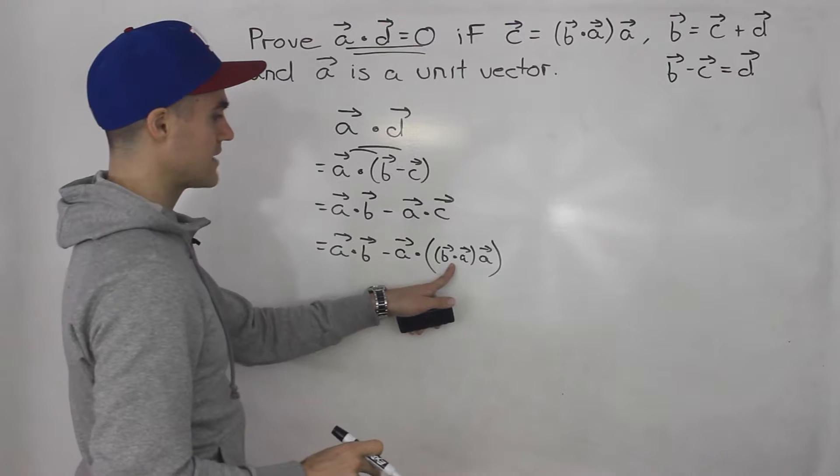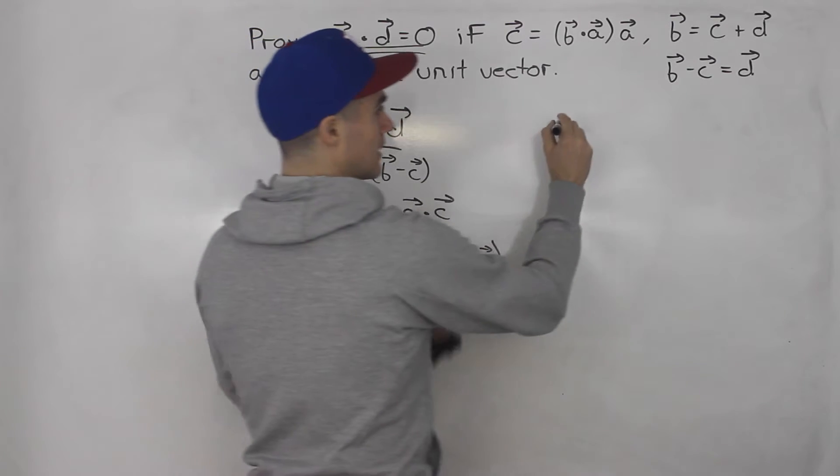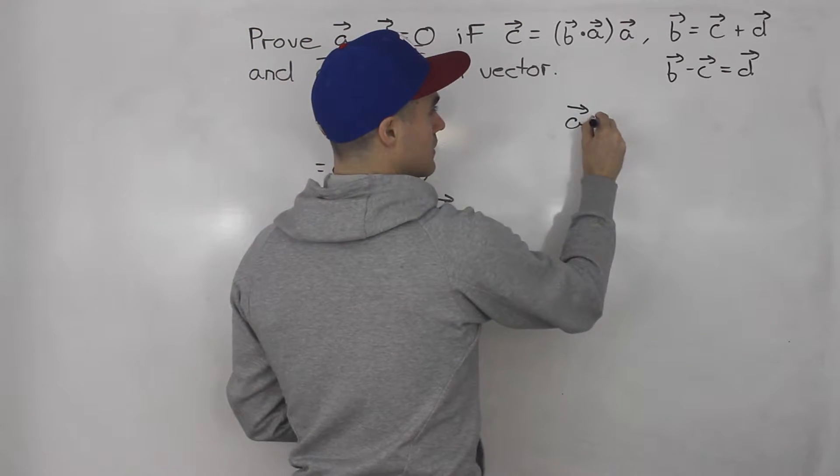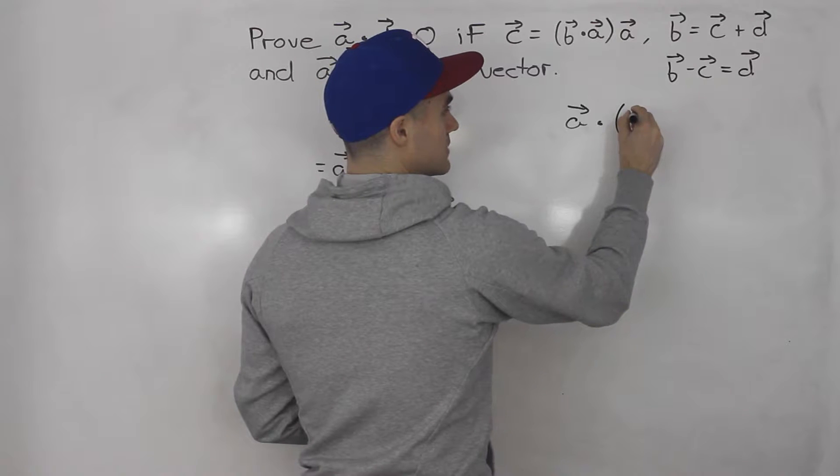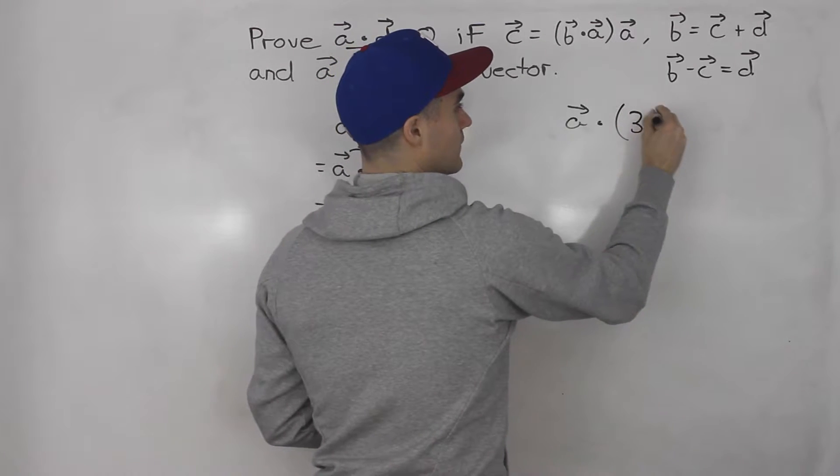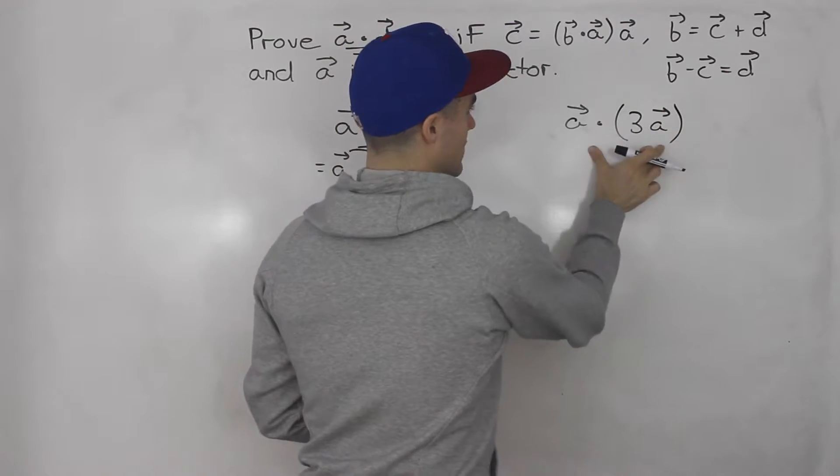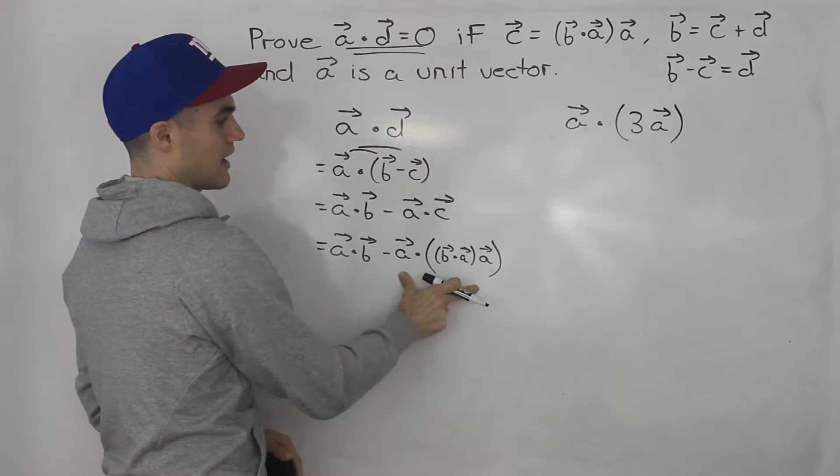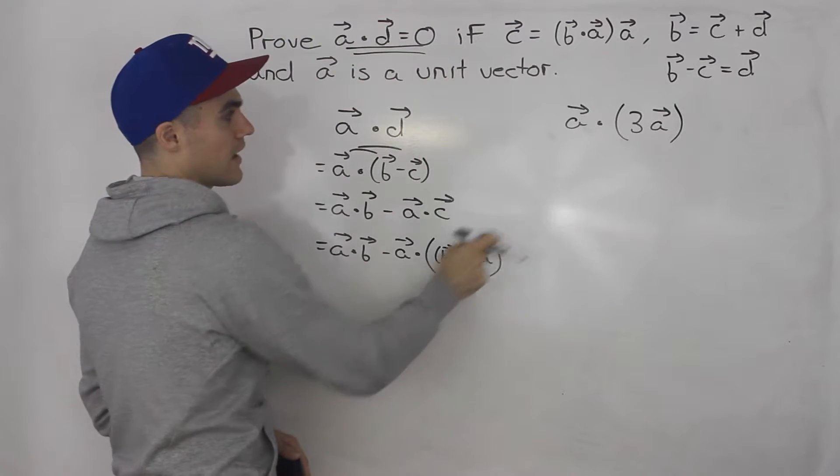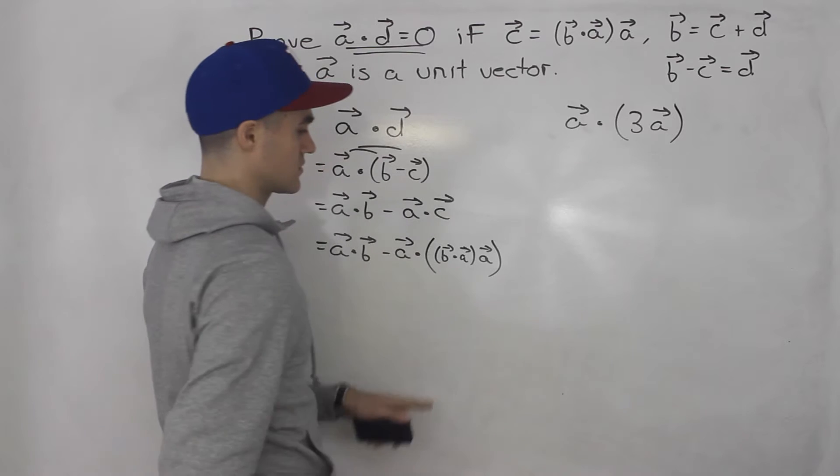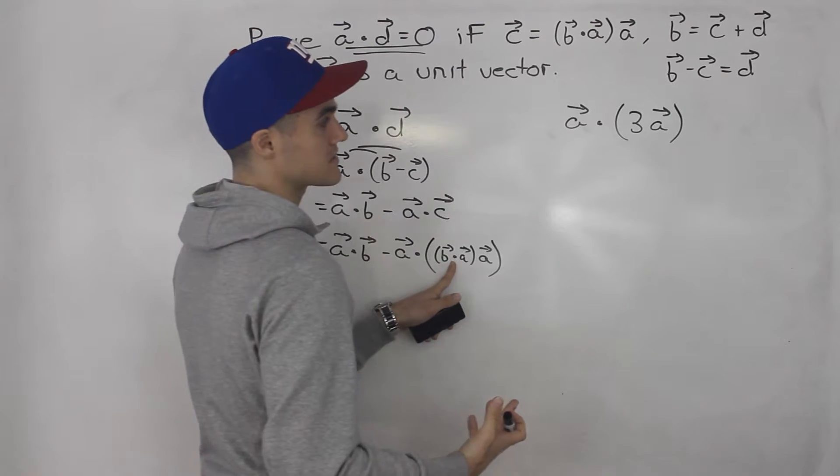So if we put a scalar here, this would be like, let's say a dot, and let's put some kind of scalar, maybe three. This is basically the same as this. So instead of putting b dot a, I just put a scalar three. So remember the dot product is just some kind of scalar.